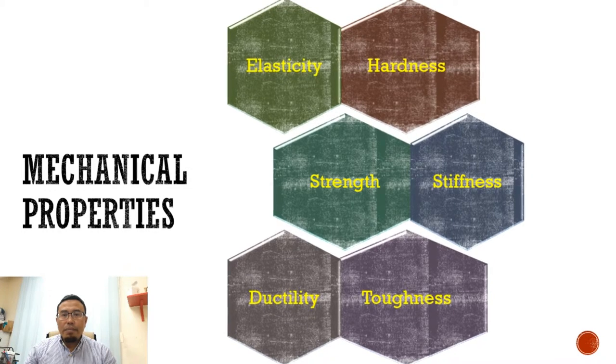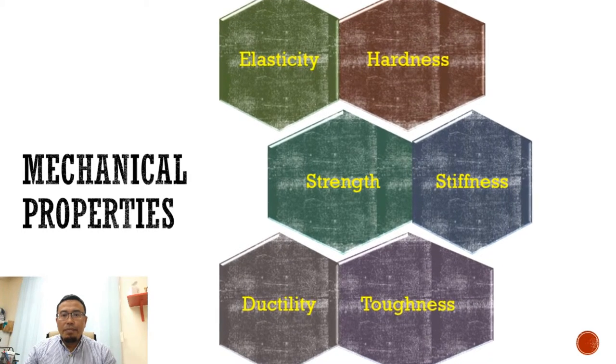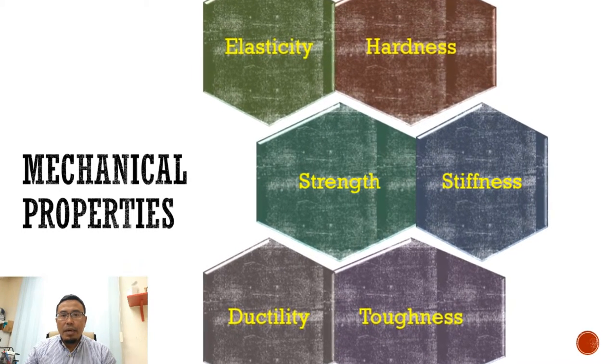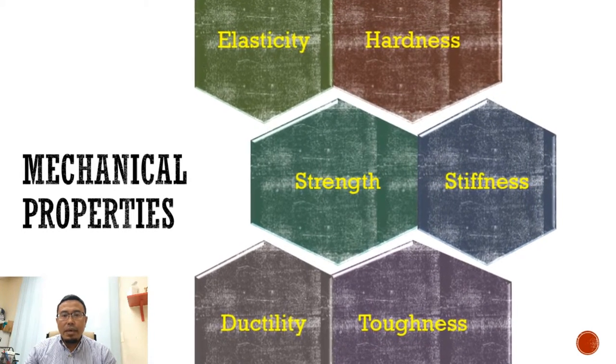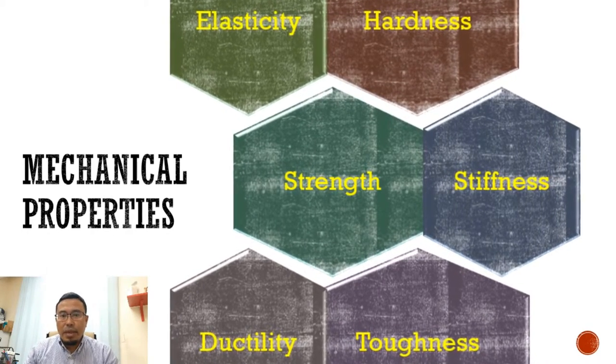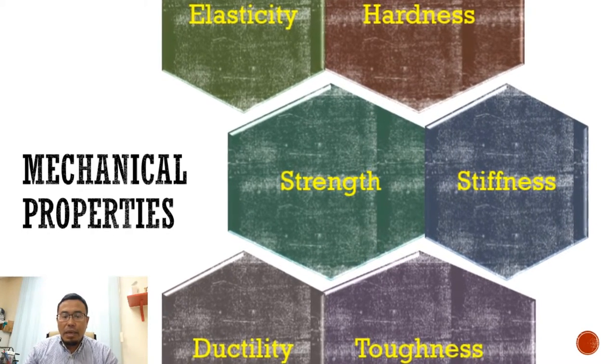Examples of mechanical properties that a material might have are hardness, elasticity, strength, stiffness, ductility, and toughness.